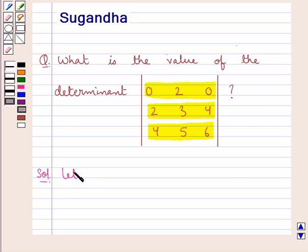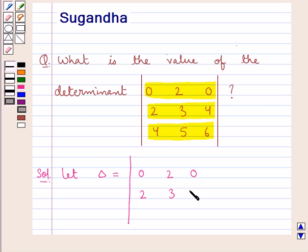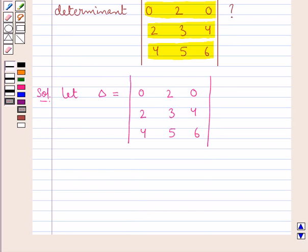We suppose let delta be equal to the determinant with elements 0, 2, 0 in the first row; 2, 3, 4 in the second row; and 4, 5, 6 in the third row. And we are supposed to find the value of this determinant.